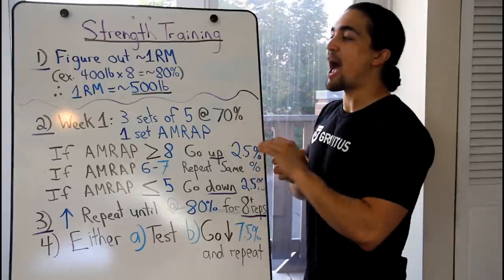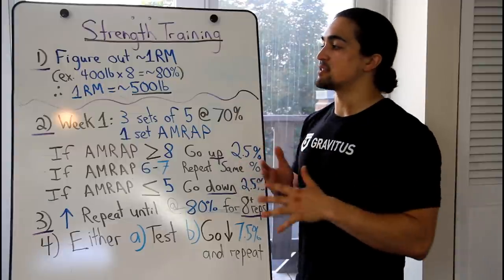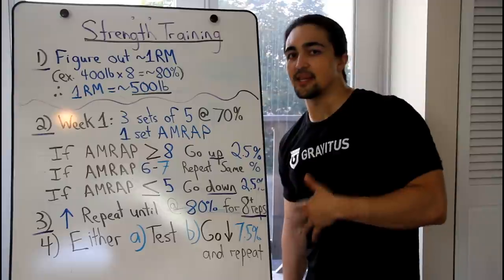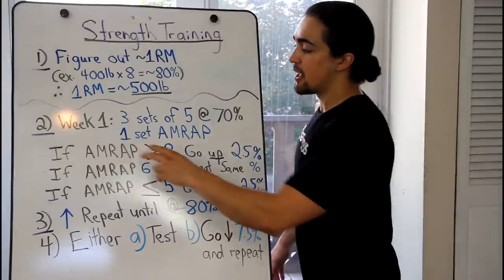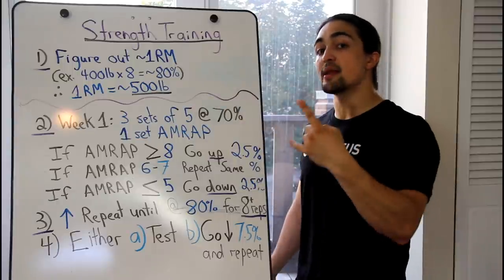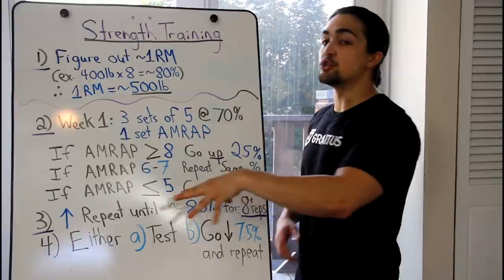So that's why I think a purely based percentage program sometimes can't work for the average population. But how do we then use percentages, which is good because then we can use hard and fast numbers in order to get a training effect for the average population. And that's when we talk about self-regulation. And what that means is that based upon how you perform on your fourth set of your main movement every single time you train, it's a four time per week program, will determine what you do next week.